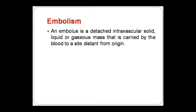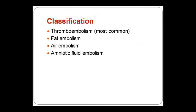The most common type of embolism is thromboembolism — that is why we studied thrombosis before this topic. Thromboembolism lodges most commonly in the pulmonary circulation. Other types include arterial embolism, fat embolism, air embolism, amniotic fluid embolism, and other causes like tumor cells and contrast media. Classification: most common is thromboembolism, followed by fat, air, amniotic fluid, and others.